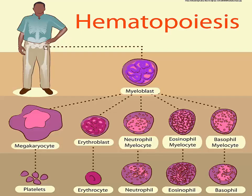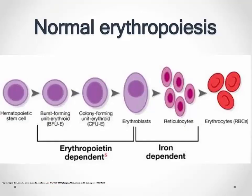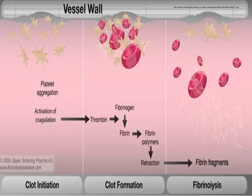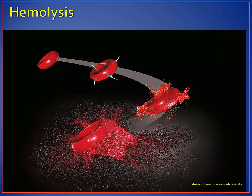Hematopoiesis simply means blood cell production, and it's the process of formation and development of the various types of blood cells and other formed elements. Normal erythropoiesis is the formation or production of red blood cells. Fibrinolysis is the breakdown of fibrin, usually by an enzymatic action of plasmin — also known as the clot-dissolving portion of the coagulation process. Hemolysis is literally the destruction of red blood cells.